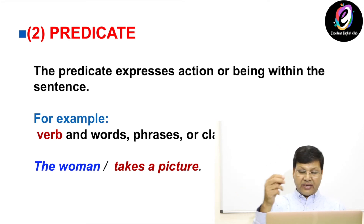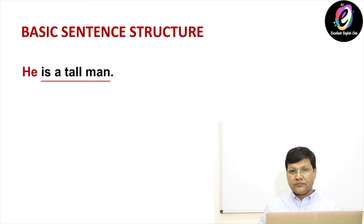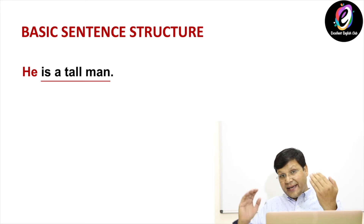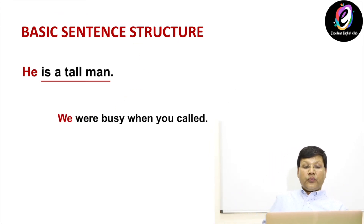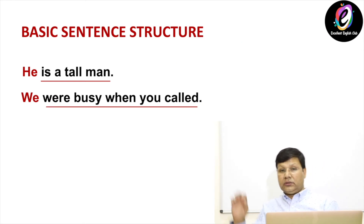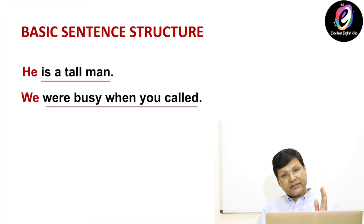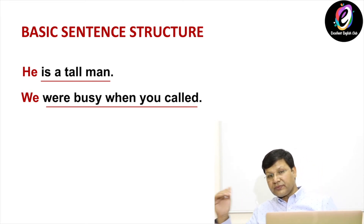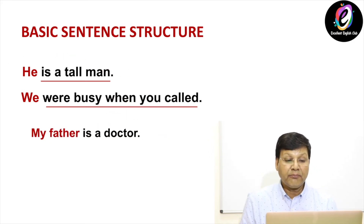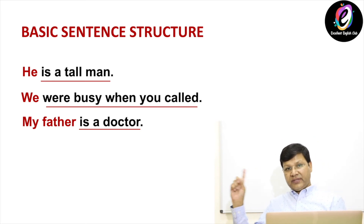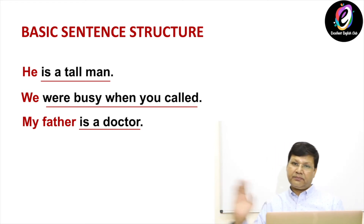Look here: basic sentence structure. Number one: 'He is a tall man.' 'He' is the subject; 'is a tall man' is the predicate. Second example: 'We were busy when you called.' 'We' is the subject; the rest of the sentence is predicate. Next: 'My father is a doctor.' 'My father' is the subject; 'is a doctor' is the predicate.